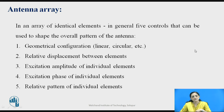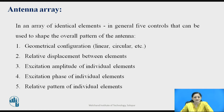In an array of identical elements, in general five control points are to be considered to shape the overall pattern of the antenna. The first point is the geometrical configuration, which may be linear or circular. The second is the relative displacement between the elements.